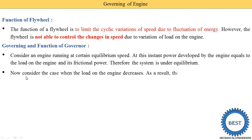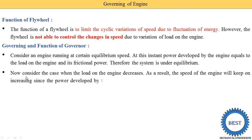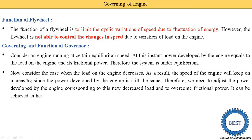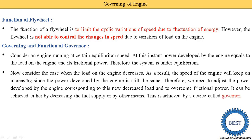Now consider the case when the load on the engine is reduced. Suppose four people are traveling and two people move out of the car, or three people on a bike and one friend gets off - the load on the engine is reduced. As a result, the speed of the engine will keep on increasing, since the power developed by the engine is still the same. The engine doesn't know that the load is reduced - it is producing the same power. But with fewer persons, we require lower power. Therefore, we need to adjust the power developed by the engine.